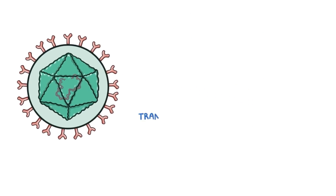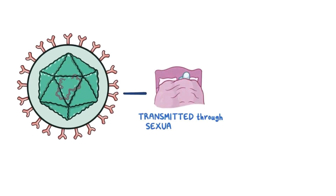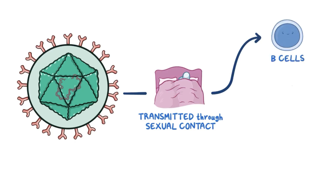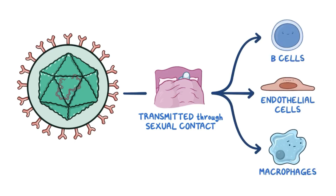HHV-8 is transmitted through sexual contact, and once in the body, it uses the viral glycoproteins on its envelope to enter a wide variety of cells, such as B cells, endothelial cells, macrophages, and epithelial cells.